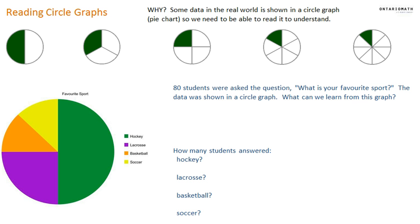I'm going to start off by looking at benchmark fractions, just so you have an idea of what they look like. This circle is divided into 2 and 1 is shaded in, so this is a half. This is divided into 3 and 1 is colored in, so it's a third. This is divided into 4 and 1 is colored in, so it's 1 quarter. This is divided into 6 and 1 is colored in, so it's 1 sixth. And this is divided into 8 and 1 is colored in, so 1 eighth.